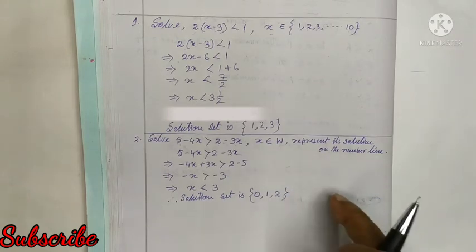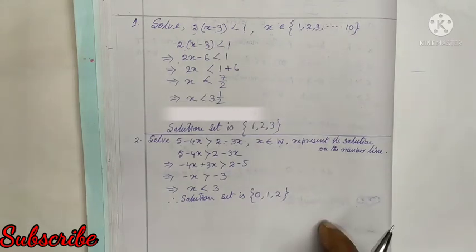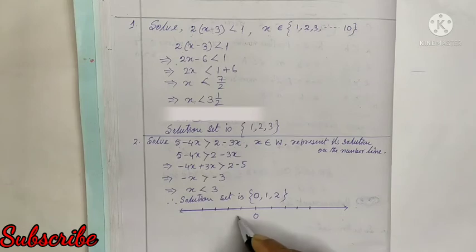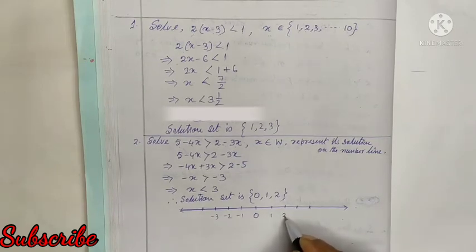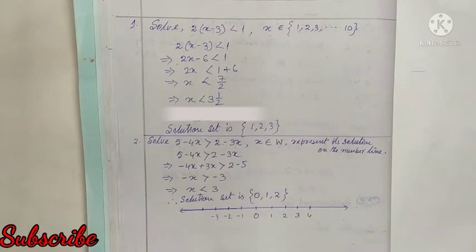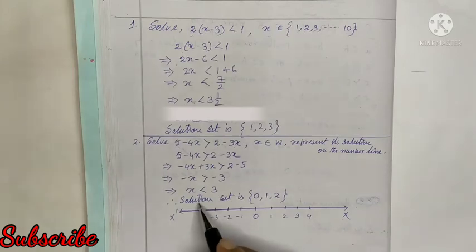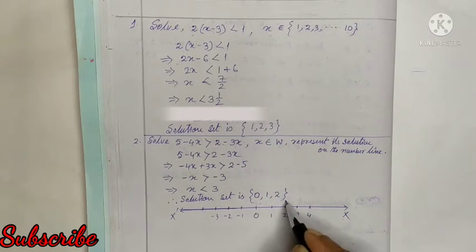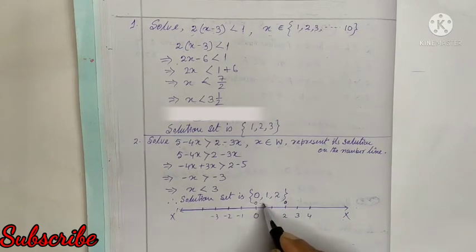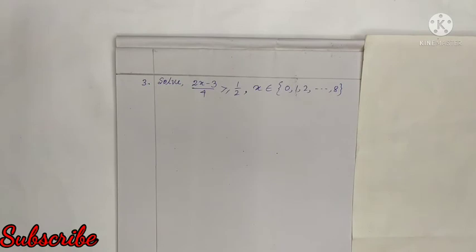Now represent the solution set on a number line. I draw a number line with 0 at center, negative numbers to the left and positive to the right. The solution set is {0, 1, 2}, so I mark 0, 1, and 2 on the number line, highlighting that portion.